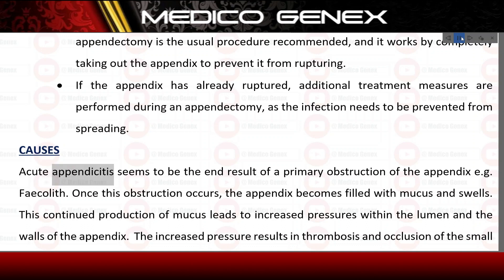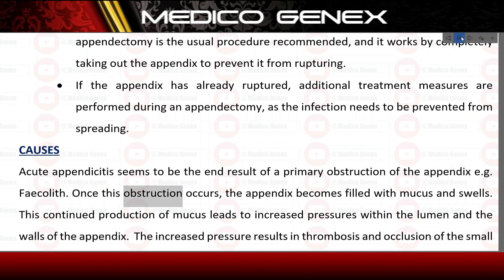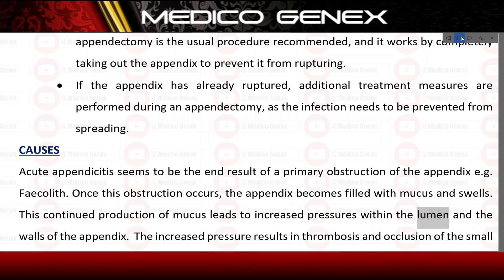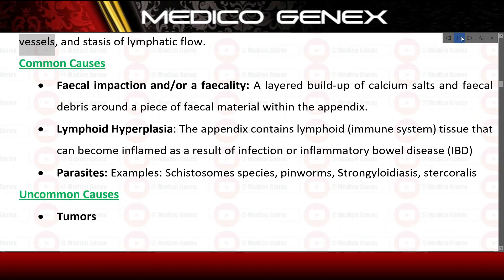Causes. Acute appendicitis seems to be the end result of a primary obstruction of the appendix, e.g., fecalith. Once this obstruction occurs, the appendix becomes filled with mucus and swells. This continued production of mucus leads to increased pressures within the lumen and the walls of the appendix. The increased pressure results in thrombosis and occlusion of the small vessels, and stasis of lymphatic flow.